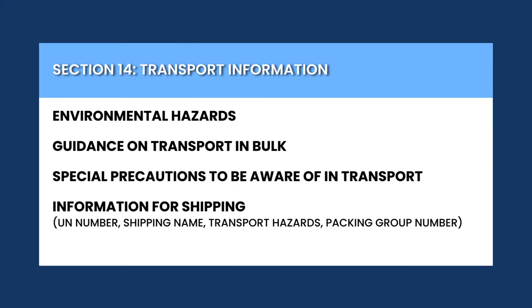Section 14 of the SDS provides information on how to transport the chemical safely. It includes precautions for safe handling, loading, and unloading during transportation, as well as any special requirements or restrictions for transportation such as packaging or labeling requirements. It's important to carefully follow the instructions listed in this section to ensure that the chemical is transported safely and legally.